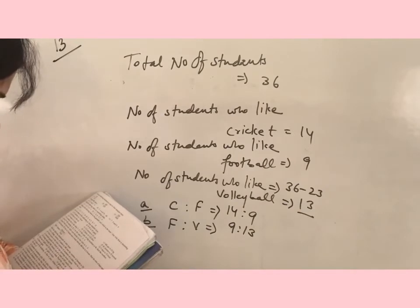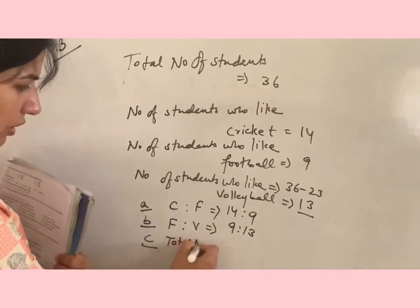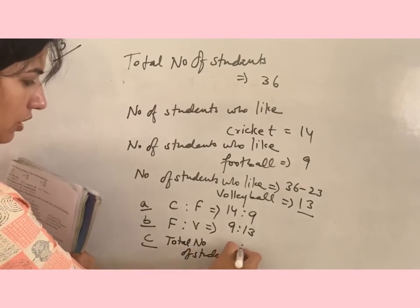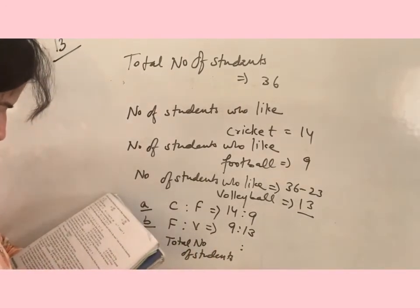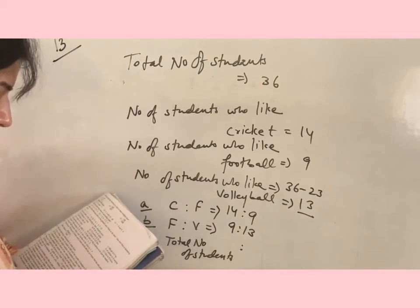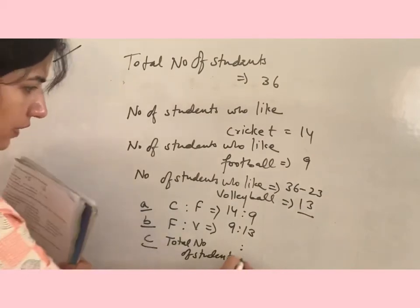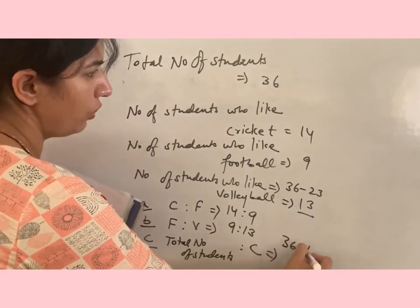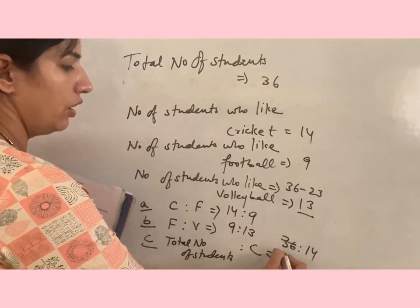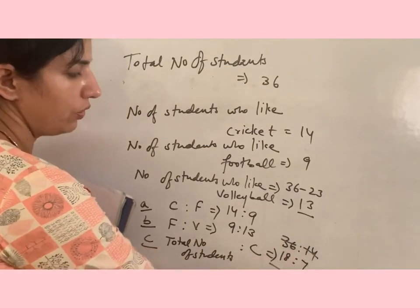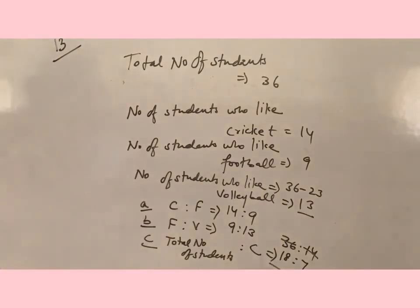Part C: number of students in a class, meaning total number of students in a class, ratio number of students who like to play cricket, which is 14. 36 ratio 14 simplifies to 18 ratio 7.